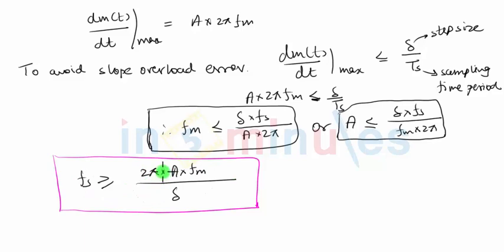So this means if we want to avoid slope overload error in delta modulation, we'll have to either use increased sampling frequency. Now let's say, for example, if sampling frequency cannot be increased, then I can impose a condition on the step size. Step size should be greater than or equal to 2π afm upon fs.